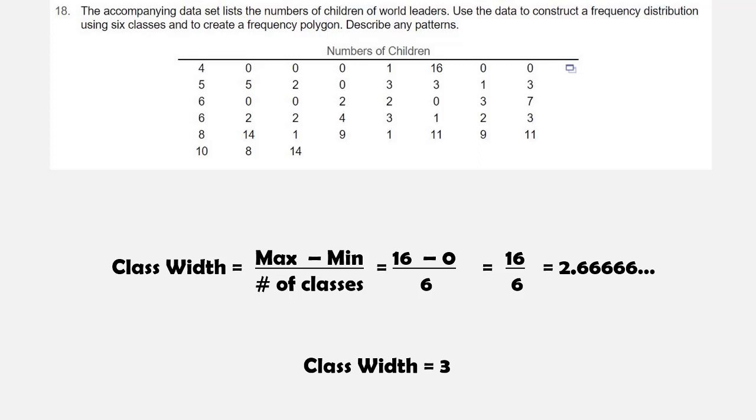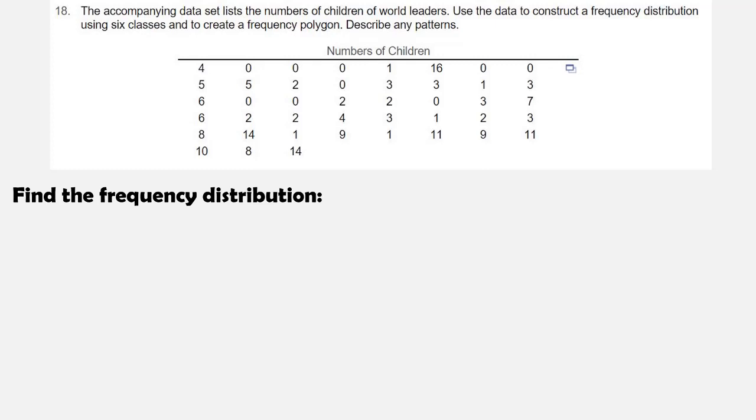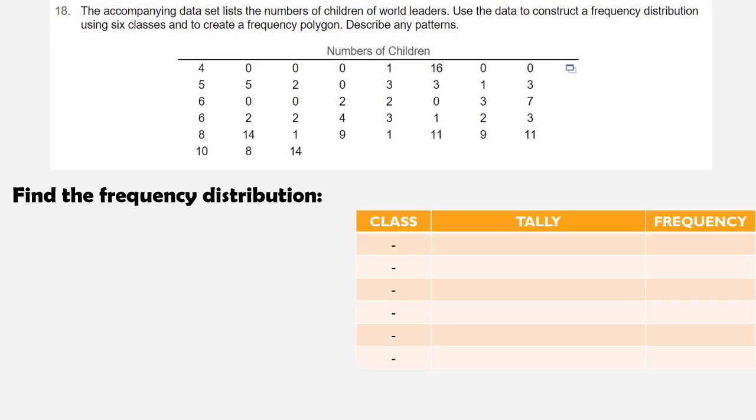We're going to use that class width to help us construct our frequency distribution. Remember that when we're finding a frequency distribution, our first class always starts at the minimum value. So the minimum value here is 0.